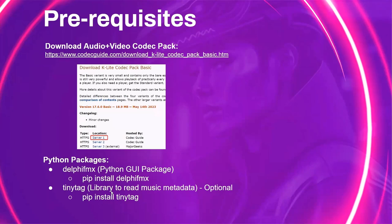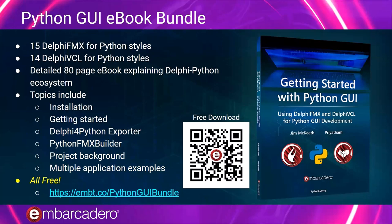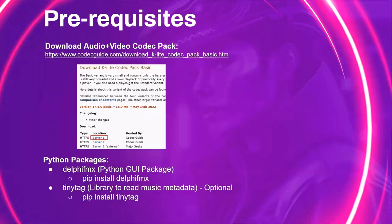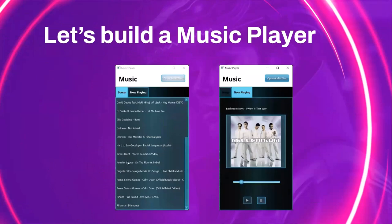Let's go ahead and design our application using the Delphi RAD Studio IDE. Before going ahead, you can see this Python V eBook bundle we are providing — you can download it using the link or scan the QR code. It includes Delphi FMX Python styles, Delphi VCL for Windows-only GUI application development, and other offerings like Delphi for Python Exporter and Python FMX Builder for Android application development. You can apply those styles to this application.